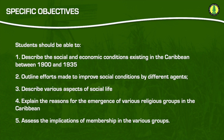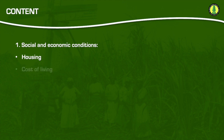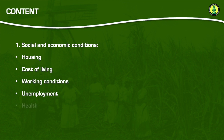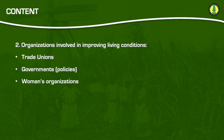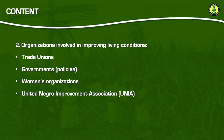The syllabus breaks down the content into five areas. Under social and economic conditions, you'll be expected to talk about housing, costs of living, working conditions, unemployment, and health. Secondly, you'll be looking at the organizations that were working towards improving conditions. These organizations included trade unions, governments, women's organizations, and the United Negro Improvement Association, founded by Marcus Garvey.